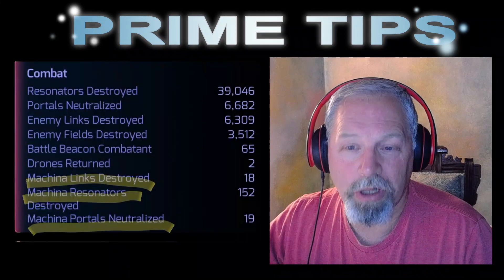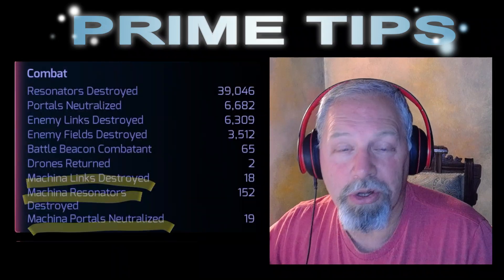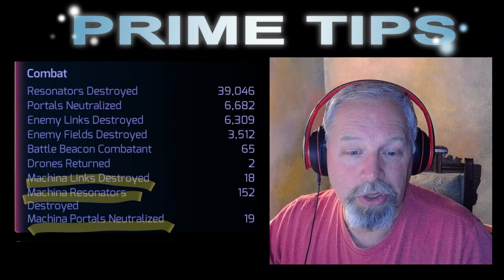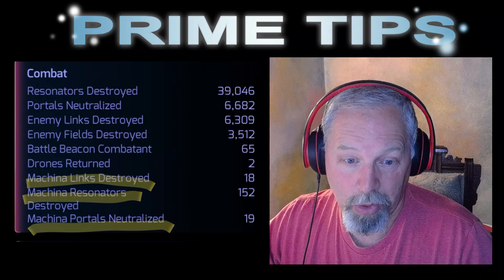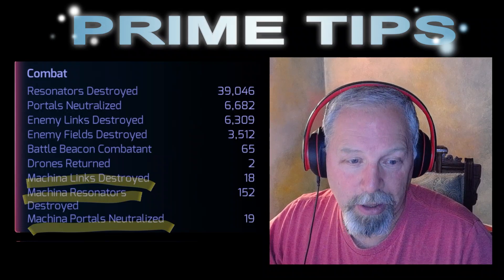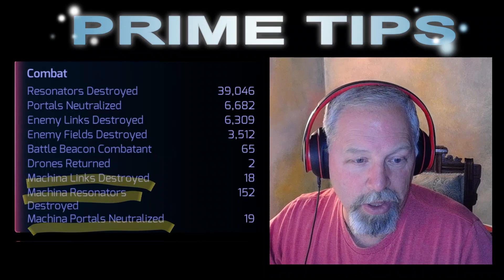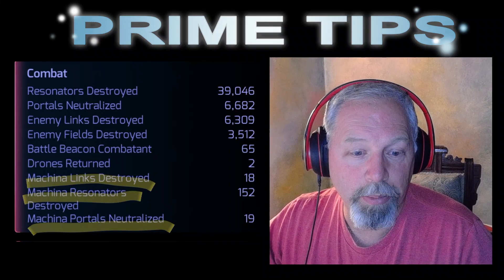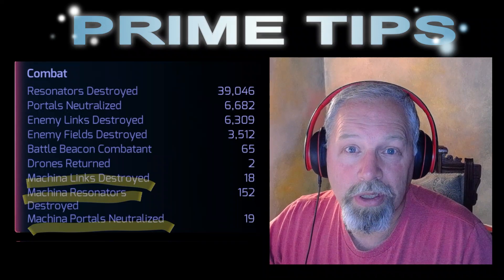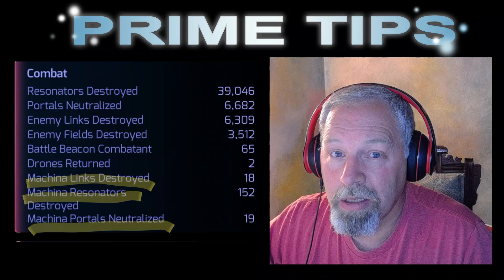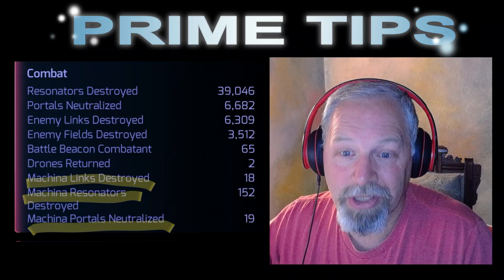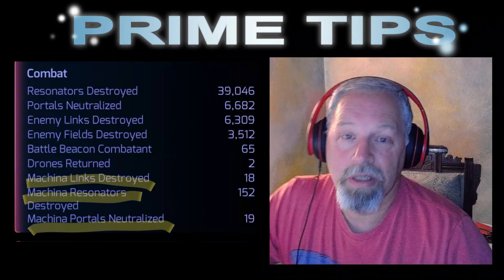What is the scanner keeping track of right now? Machina portals destroyed, Machina resonators destroyed — which if you get them all with nothing kicked out should be eight times the number of portals you've destroyed — and portals neutralized. The links destroyed and portals neutralized counts should be very close. But you might find that lone Machina portal that's out there by itself with no links and just kill it.